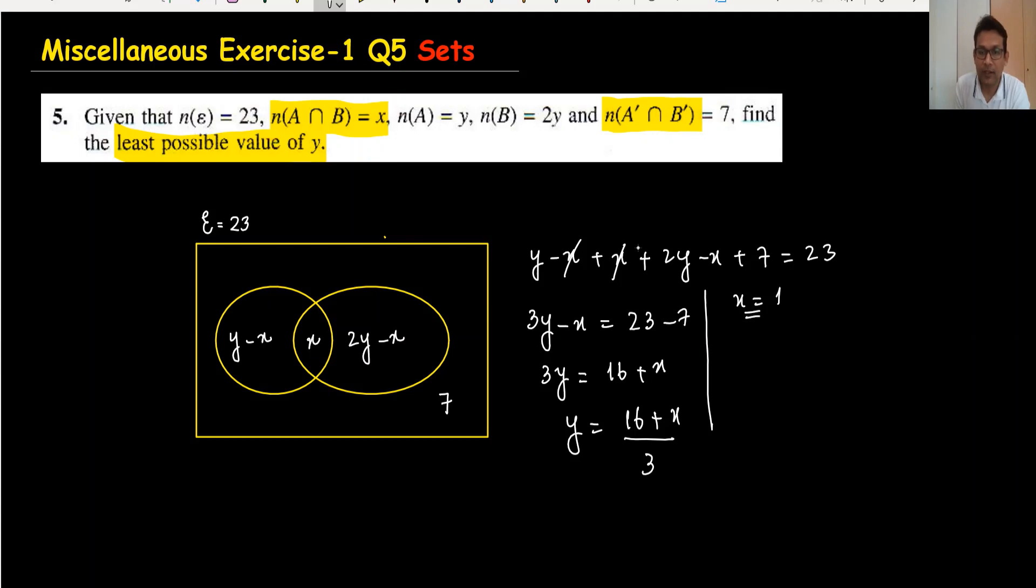For x = 1, y = (16 + 1)/3 = 17/3. This is not possible because in sets we don't have decimal numbers, so I won't take this value.